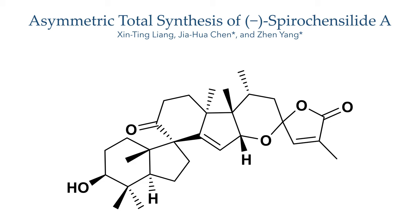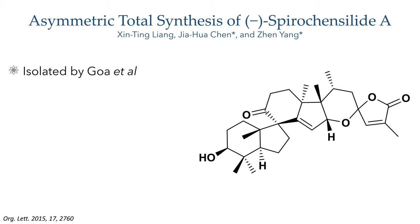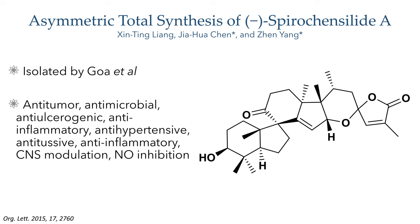Spirochensylide A is a member of an emerging and biologically important class of natural products with a unique spirocyclic core, which was isolated by Gao and co-workers from the Abies chensiensis plant, an evergreen fir native to China. Extracts from this plant have shown a range of biological activities including anti-tumor, antimicrobial, anti-ulcerogenic, anti-inflammatory, anti-hypertensive, anti-tussive, and CNS modulating activities.